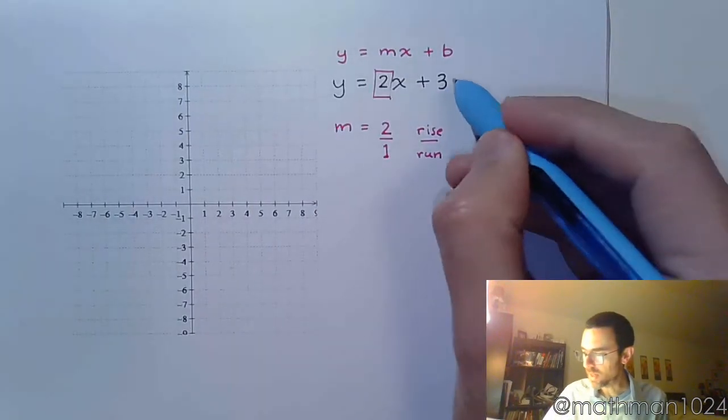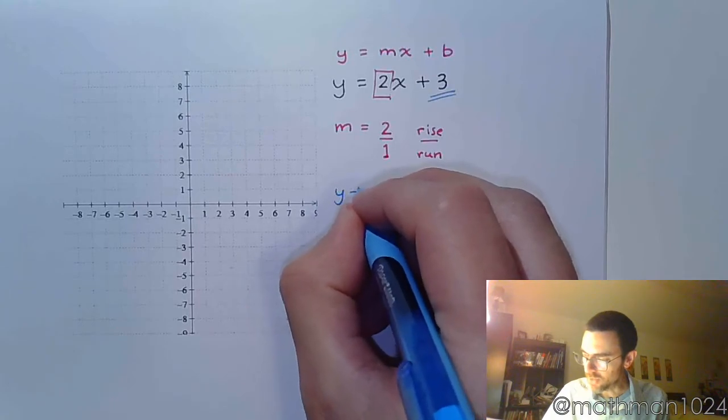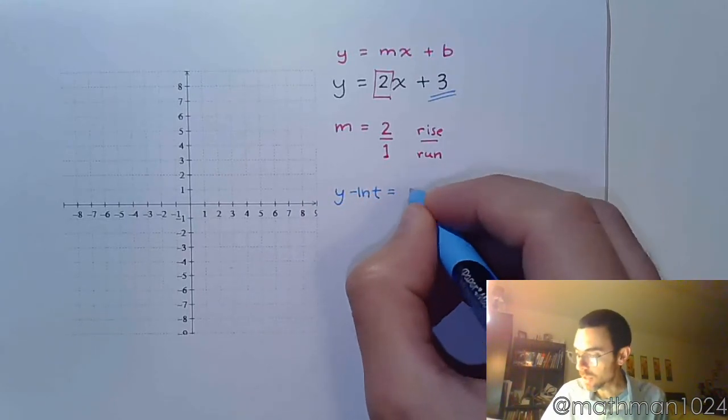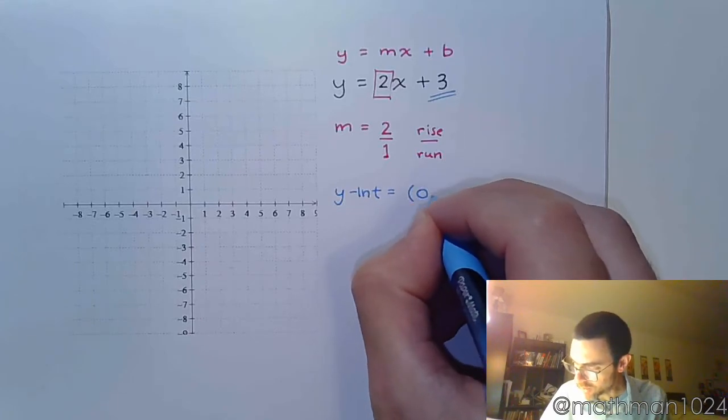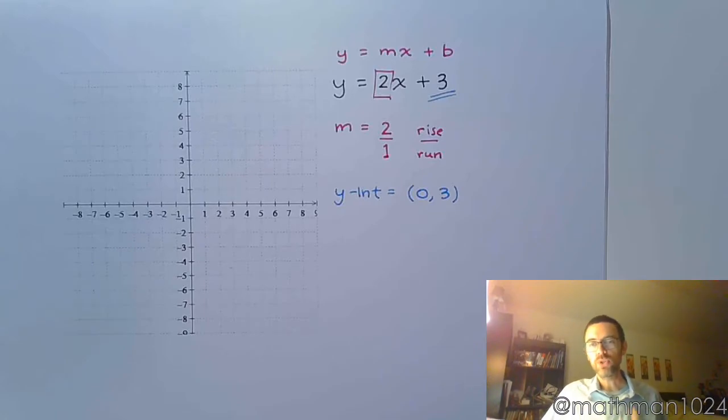We have this constant at the end, that b value, and we talked about in the last video how that corresponds to the key point being our y-intercept. It's going to be the ordered pair (0, 3). If you just say 3, you will be wrong because the y-intercept is a point, which means it must be given as an ordered pair with both x and y coordinates.